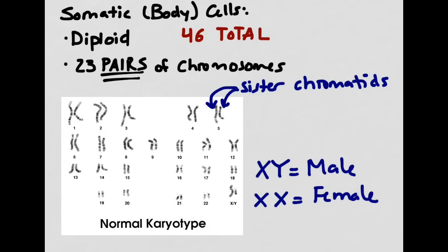If the person has an X chromosome and a Y chromosome, they are biologically male. If they have two X chromosomes, they are biologically female. Notice how the Y chromosome is very short and stubby compared to the X chromosome.